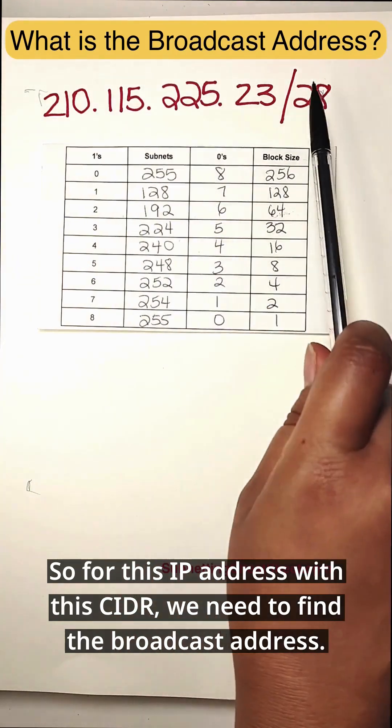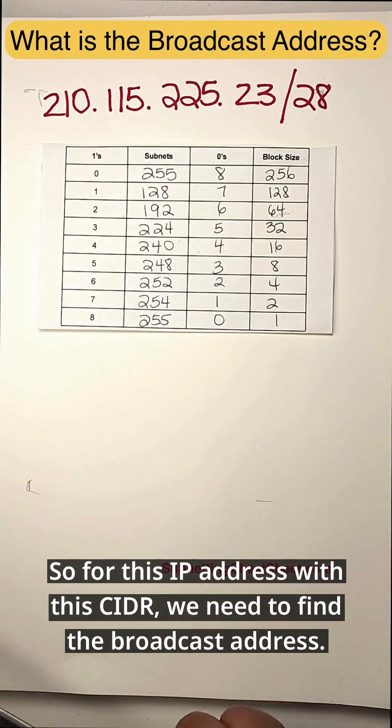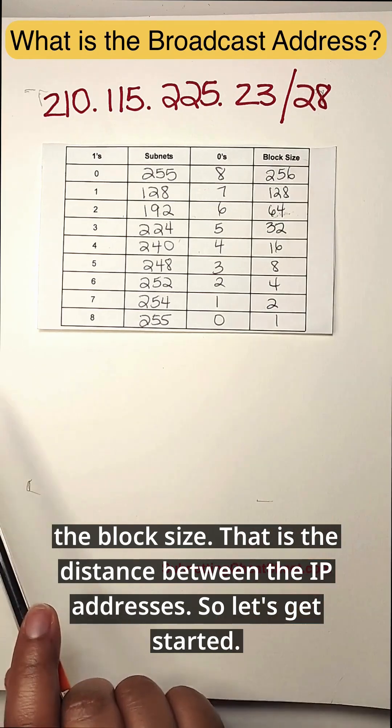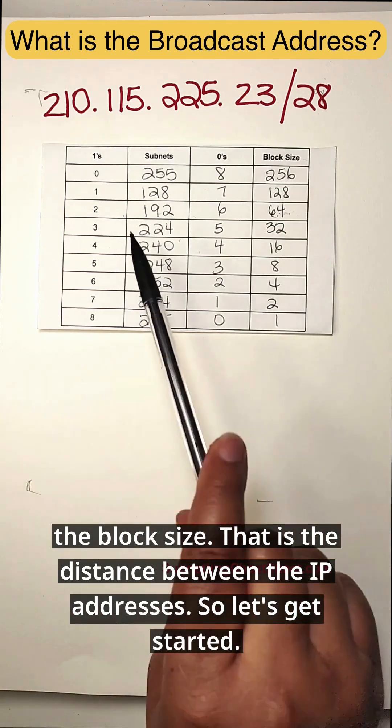So for this IP address with this CIDR, we need to find the broadcast address. First we need to find the block size, that is the distance between the IP addresses. Let's get started.